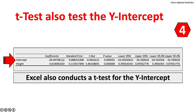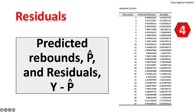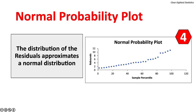Excel also conducts a t-test for the Y-intercept, which also has significant results. Excel reports residuals — the predicted rebounds Y-hat and the residuals (the actual minus the predicted variable). Excel draws a normal probability plot; the distribution of residuals should approximate a normal distribution, which this one does because the dots are arranged nearly in a straight line.